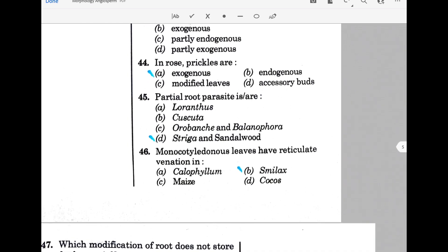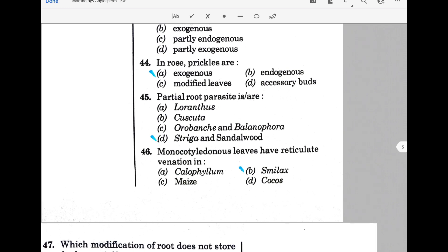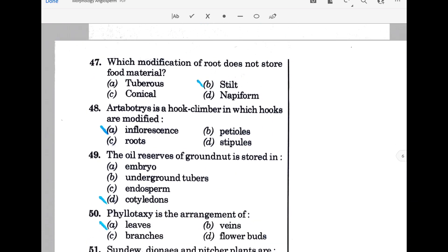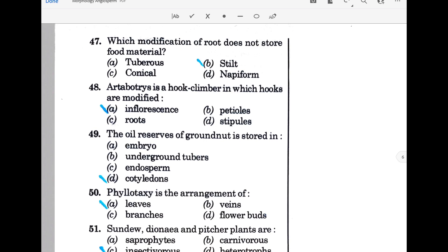Partial root parasites include Striga and sandalwood. Monocotyledonous leaves have reticulate venation in Smilax. Which modification of root does not store food material? The answer is stilt roots. Artabotrys is a hook climber in which hooks are modified inflorescence. The oil reserves of groundnut are stored in cotyledons. Phyllotaxy is the arrangement of leaves.